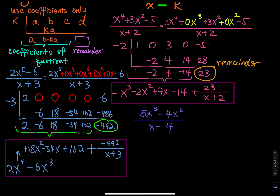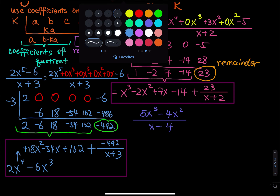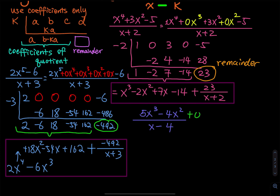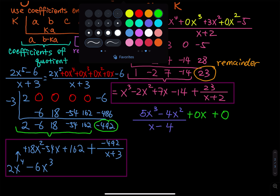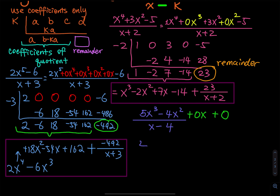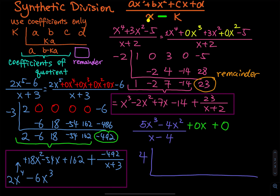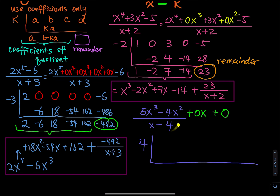Moving on to the last problem. We have the third degree and the second degree, but the first degree and the constant are missing. So we add zero x to the first and then a constant of zero. We have 4 here — do you know why this is 4 and not negative 4? Because we have x minus k, so we put k right here. This is a minus 4, then we put a positive 4 on the synthetic division. This number and this number must be opposites.